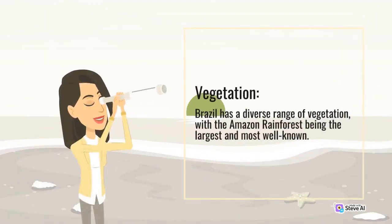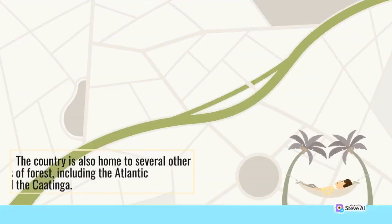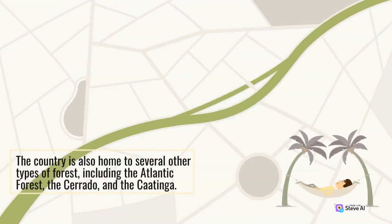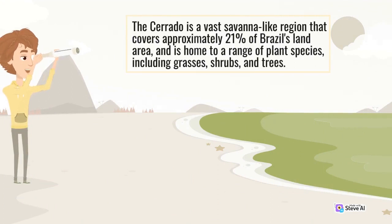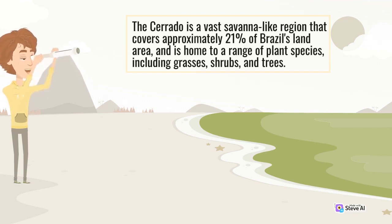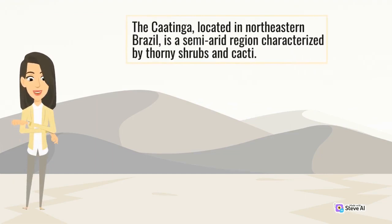Brazil has a diverse range of vegetation, with the Amazon rainforest being the largest and most well-known. The country is also home to several other types of forest, including the Atlantic Forest, the Cerrado, and the Caatinga. The Cerrado is a vast savanna-like region that covers approximately 21% of Brazil's land area, and is home to a range of plant species including grasses, shrubs, and trees. The Caatinga, located in northeastern Brazil, is a semi-arid region characterized by thorny shrubs and cacti.